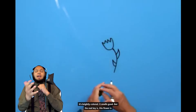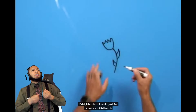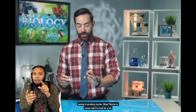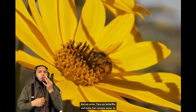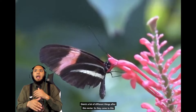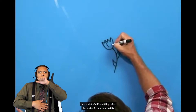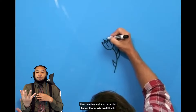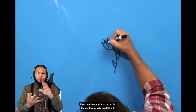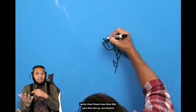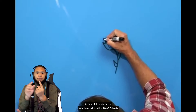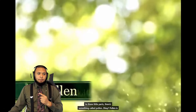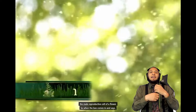Nectar is sweet and it is fuel for a lot of different organisms — there are birds that eat nectar, there are bees that eat nectar, and there are butterflies and moths that consume nectar. So they come to this flower wanting to pick up the nectar. But what happens is that in addition to nectar, these flowers have little parts that stick up, and attached to those parts is something called pollen. Pollen is the male reproductive cell of a flower.